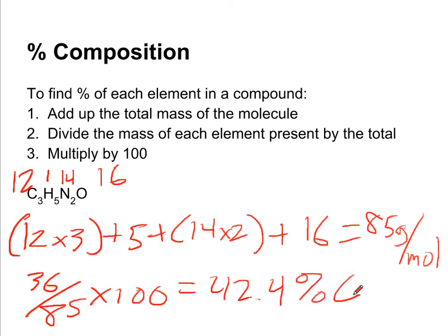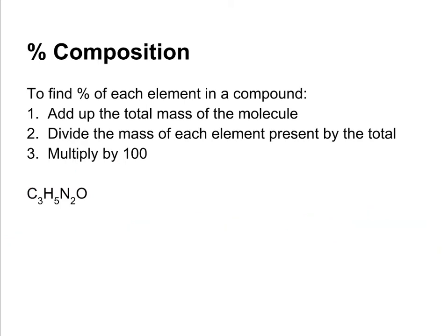Let me clear this off and we'll do the others. Hydrogen, the total mass was only 5, divide that by 85, and multiply by 100. We should end up with 5.9% hydrogen.